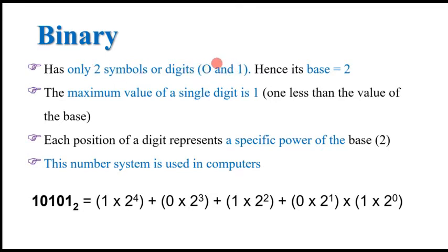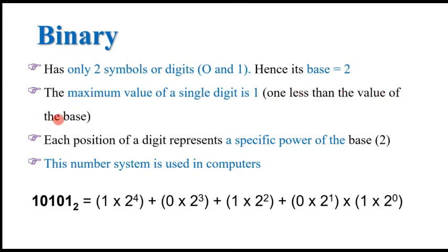Every information is represented with a collection of bits. These bits have only two symbols which are zero and one, hence its base is two. Binary means two — unary is one, binary is two, trinary is three. So as the name indicates, binary means it only has two digits. Every number with base two we call binary. The maximum value of a single digit is one — one less than the value of the base, because the base is two.